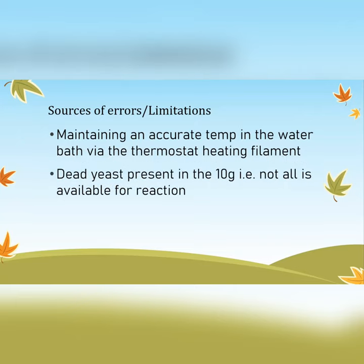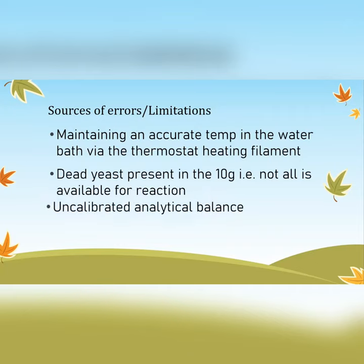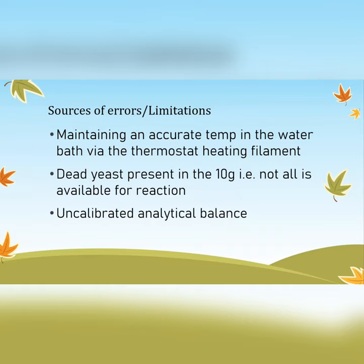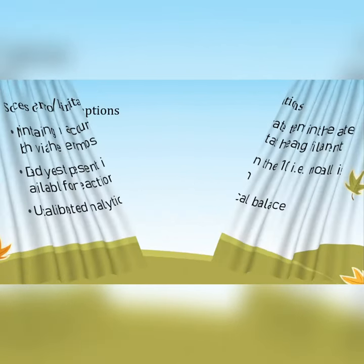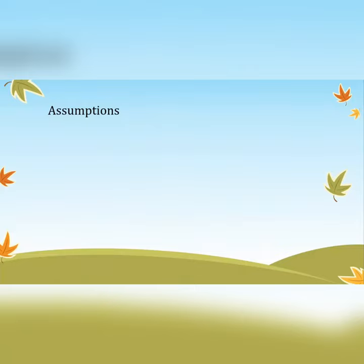Another source of error is dead yeast in your five grams. You may think all five grams of yeast is alive, but that may not be true — dead yeast would not be available for the reaction. Additionally, if you use an uncalibrated analytical balance, that could also give you inaccurate or imprecise results.